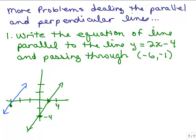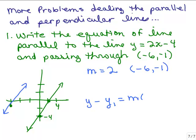How are we going to do this? We want the equation of the line parallel to y equals 2x minus 4. If it's parallel, it's got to have the same slope. The slope of y equals 2x minus 4 is 2. One of the points it goes through is negative 6, negative 1. Let's use the point-slope formula: y minus y1 equals m times x minus x1. We plug in 2 for the slope, negative 1 for y1, and negative 6 for x1.